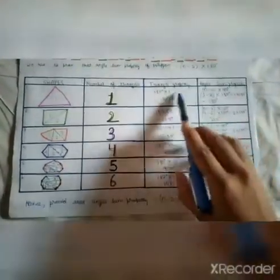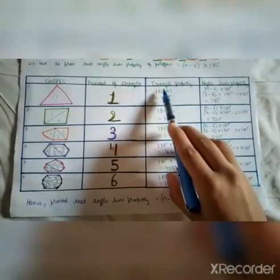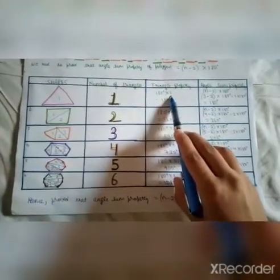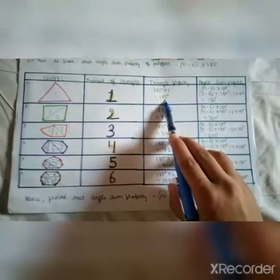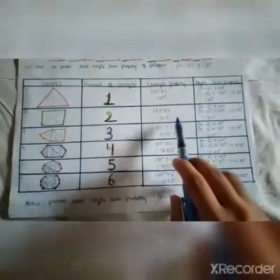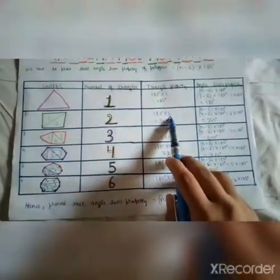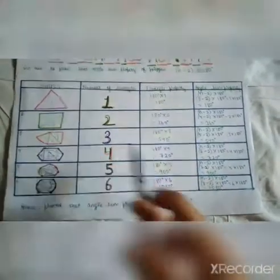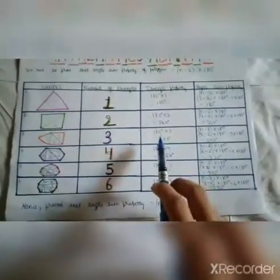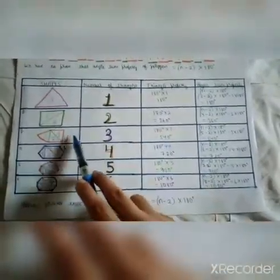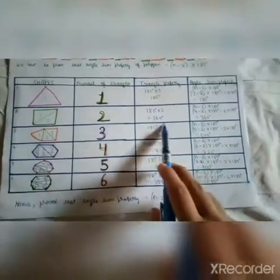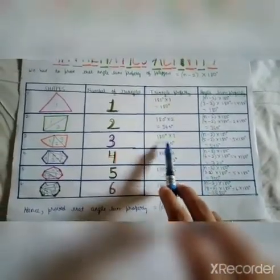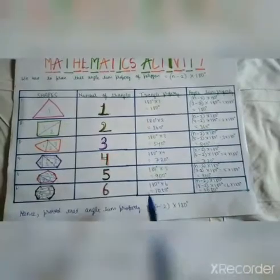According to the triangle property, we multiply the number of triangles by 180 degrees. So 180 × 1 = 180 degrees in a triangle. 180 × 2 = 360 degrees in a square. The number of triangles in a pentagon are 3, so we multiply 3 by 180 degrees, which gives 540 degrees.